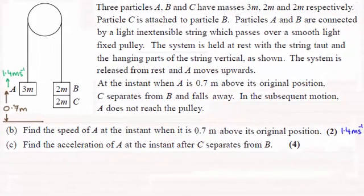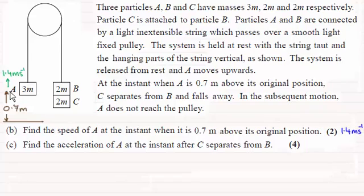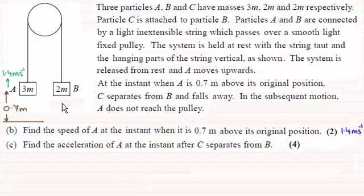Hi there. In this video we're just going to be looking at part C of this question. Remember in part B we had to find the speed of A when it was 0.7 metres above the ground, and we found out that it was 1.4 metres per second. Now we're told that particle C of mass 2m comes away from particle B, so if I just remove that, we've now got to find the acceleration of A at the instant that C separates from B.